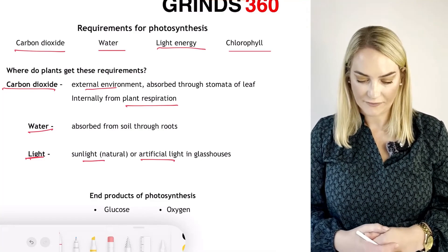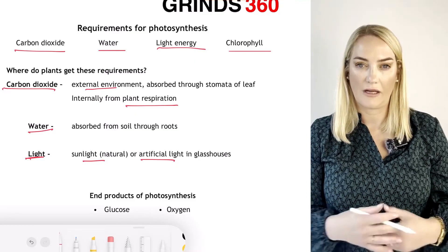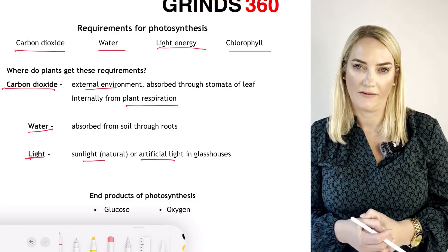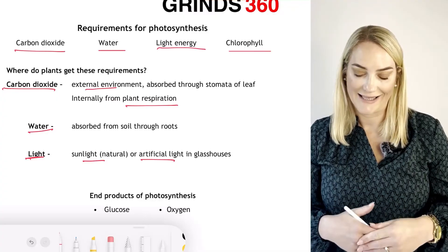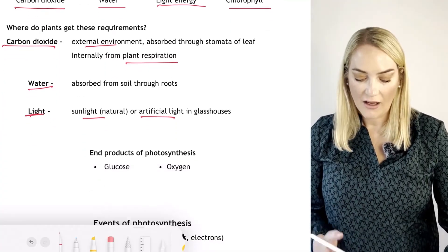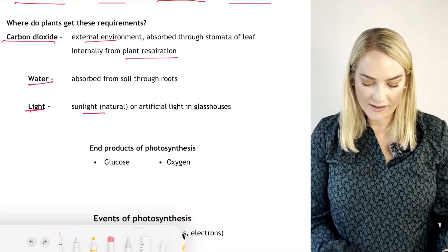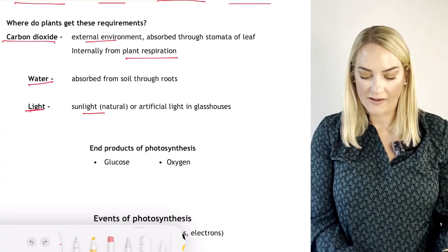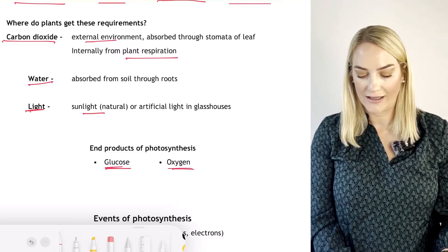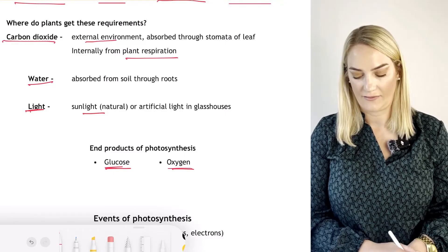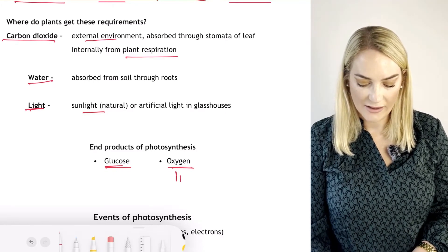Light can be natural or artificial — sunlight or artificial light such as in a glasshouse. That light is then trapped by the chlorophyll within the chloroplast.